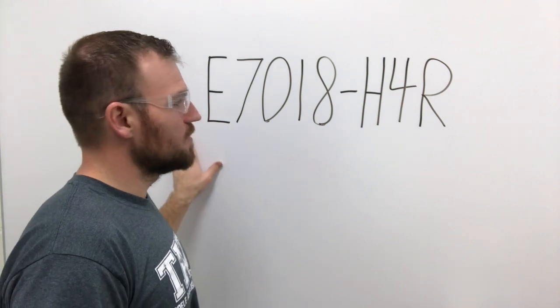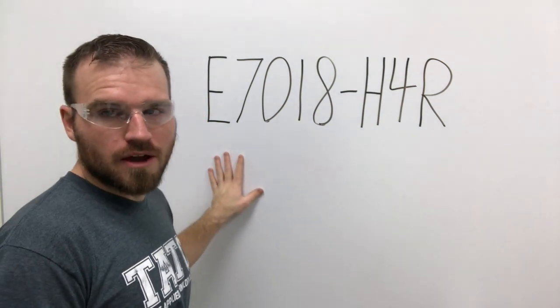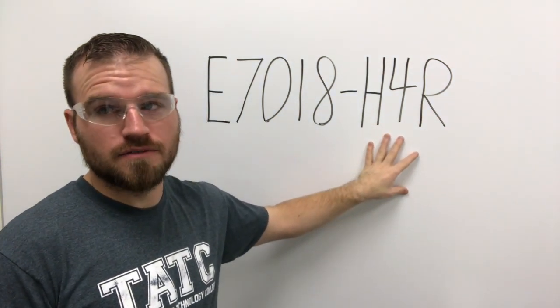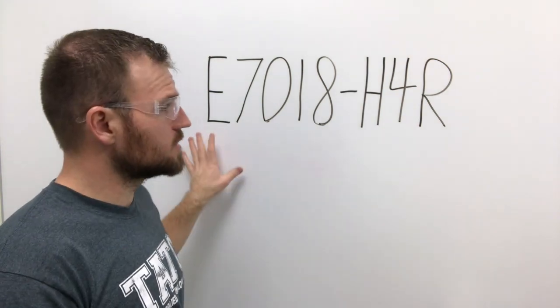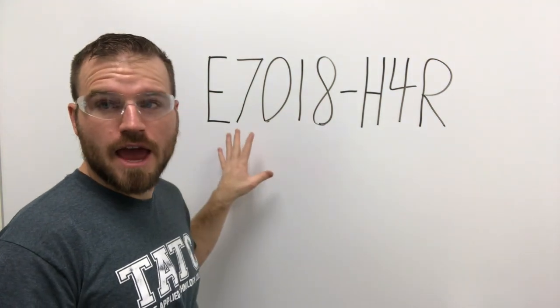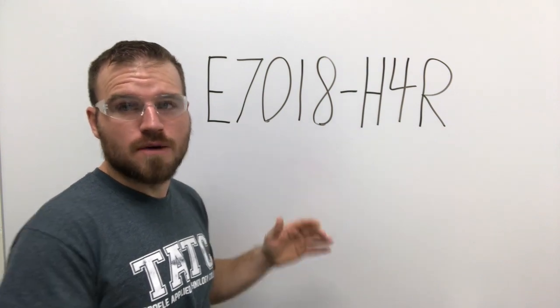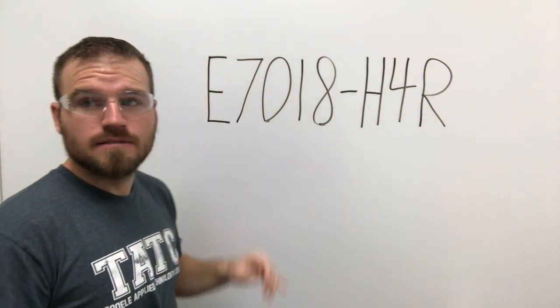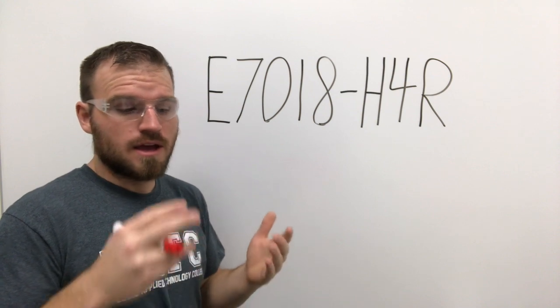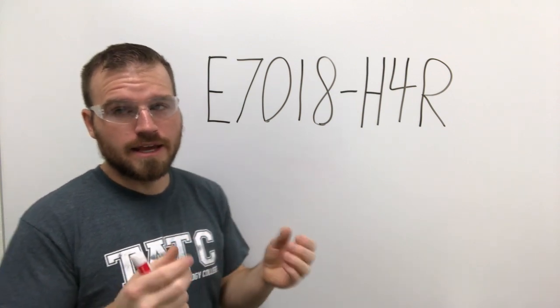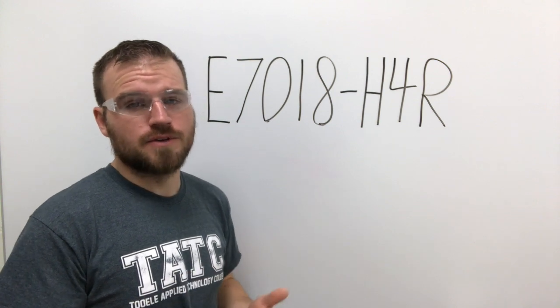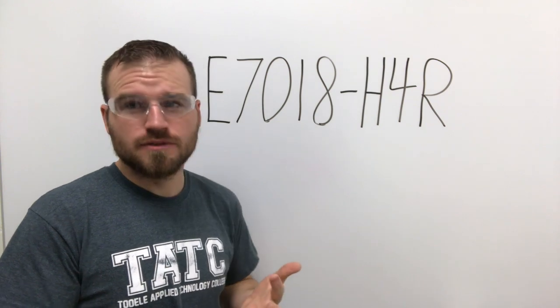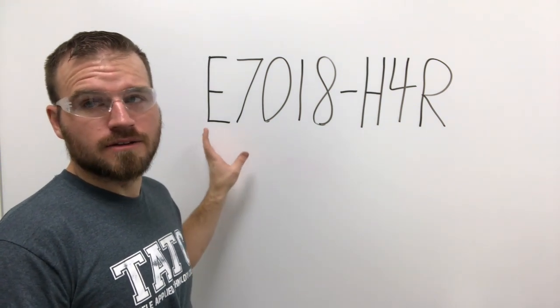Now I want to talk about welding rod specification, so that's going to be the numbers on the side of the welding rod. One thing I want to point out is this H4R. Not every welding rod has an H4R at the end of it. We're going to get there in a second, but what I want to start with is the 7018, because every welding electrode will have a number that is like this one. First thing I want to point out is going to be the E. E stands for electrode.